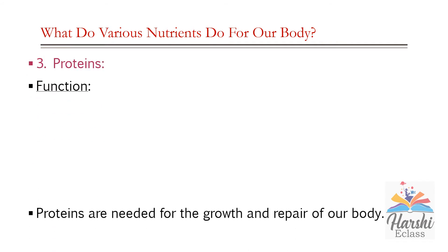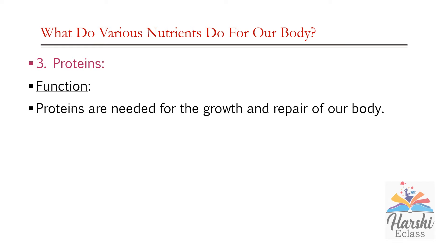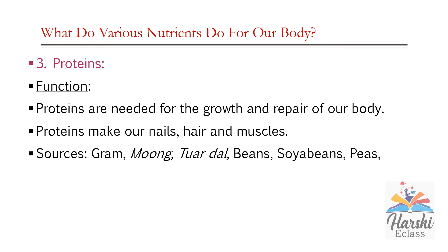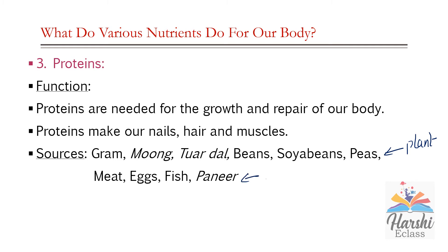Proteins. The main function of proteins is that they are needed for the growth and repair of our body. Proteins make our nails, hair, and muscles. Growing children should eat a protein-rich diet because protein is the main component of a person's muscles, skin, bones, organs, and many other body parts. Protein helps to build muscles by repairing, maintaining, and replacing the tissues in the body. Protein also helps in the proper development and working of the immunity system. Main sources of proteins include gram, moong, turdhal, beans, soya beans, and peas from plants, and meat, eggs, fish, and paneer from animals.